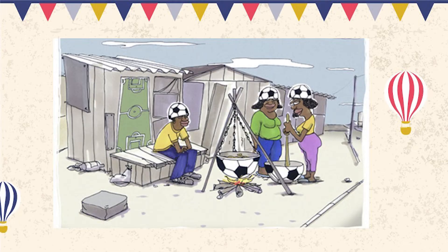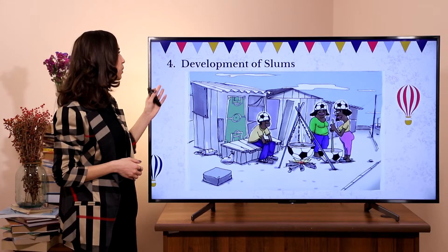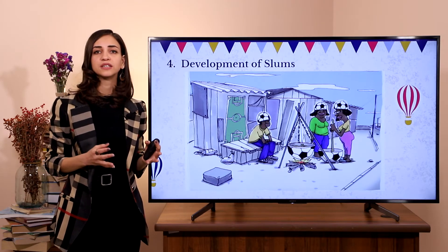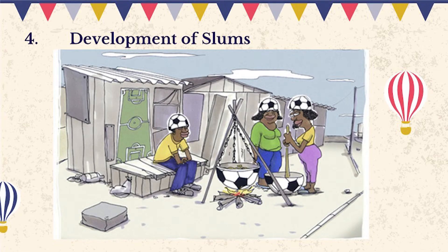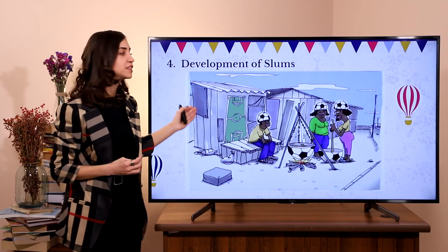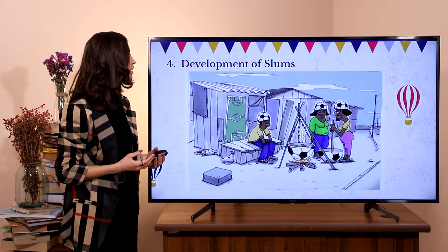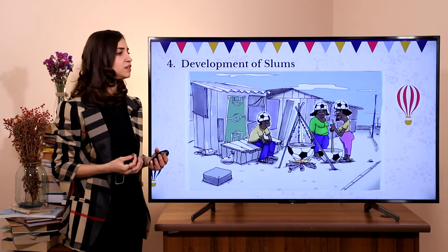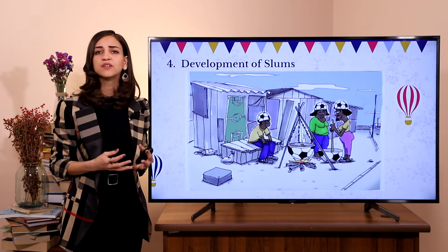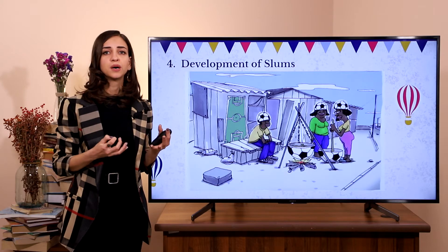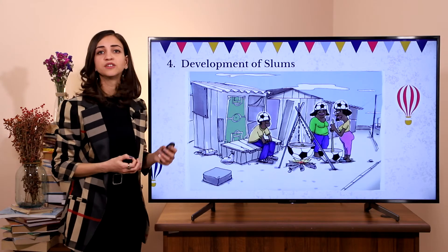Next picture. What problems do you notice here? The problem is the development of slums. What does this mean? Look at their houses — what conditions do they have? They are so poor, and we need to address these kinds of slums.